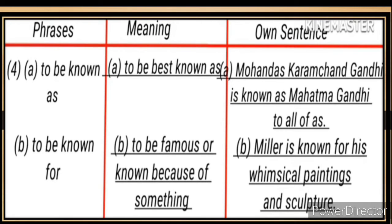Fourth pair: (a) 'To be known as' — sentence: Mohandas Karamchand Gandhi is known as Mahatma Gandhi to all of us. (b) 'To be known for' — meaning: to be famous for or known because of something. Sentence: Miller is known for his whimsical paintings and sculpture.